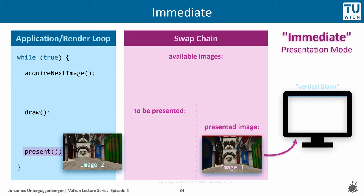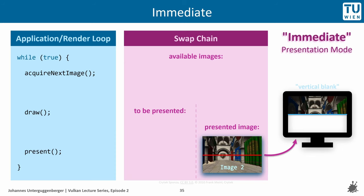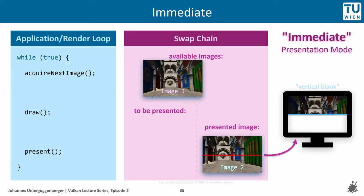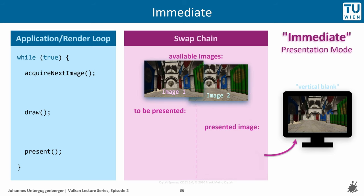Returning to the immediate mode: the application is sending another image to the SwapChain for presentation while a different image is currently being presented. There is a 'to be presented' section in the SwapChain region, which receives images waiting for the next vertical blank. With the immediate presentation mode, however, the SwapChain does not utilize such a queue at all. It just sends the incoming image straight to the presented image area, swapping out the previously bound image and sending that back to the bucket of available images. We get visual tearing, and the SwapChain doesn't care about the exact point when the vertical blank occurs.